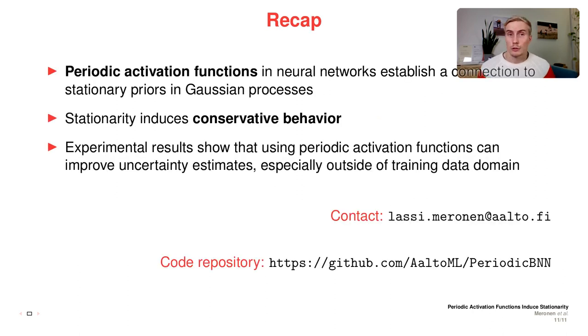Then a short recap. Periodic activation functions in neural networks establish a connection to stationary priors in Gaussian processes. This stationarity induces conservative behavior. Our experimental results show that using periodic activation functions can improve uncertainty estimates, especially outside of the training data domain. If you have some questions regarding this paper, feel free to join the poster session to ask your question. Thank you very much for listening.